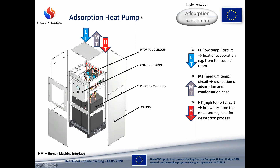The main components of our adsorption heat pumps are the process modules — always an even number: two, four, six, or eight. There is also a hydraulic group consisting of pumps and three-way valves directing the HTF at the right temperature levels to corresponding heat exchangers, a control cabinet with human-machine interface, and casement with frames. At the top you can see the connections of the three circuits: LT has to be connected to the cold distribution circuits, for example fan coils.